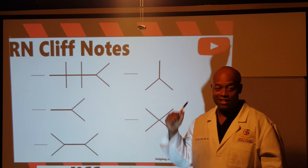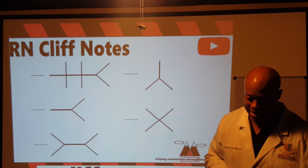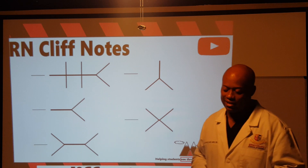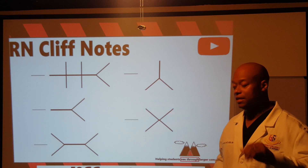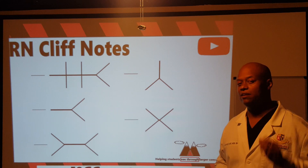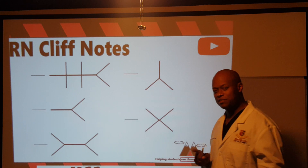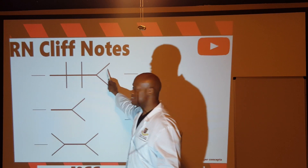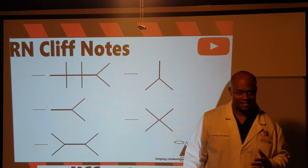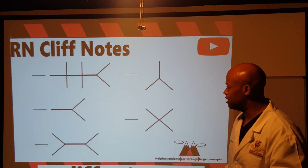Back in the day they used to call it the SMA-7, but now it's called the BMP — basic metabolic panel. And KEM-7, why? Because there are seven spaces in this diagram. One, two, three, four, five, six, seven — seven spaces that make up the KEM-7.